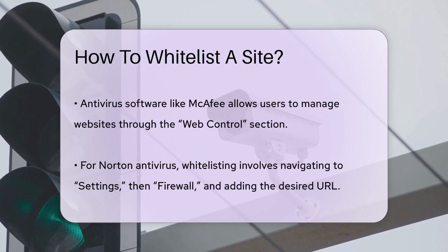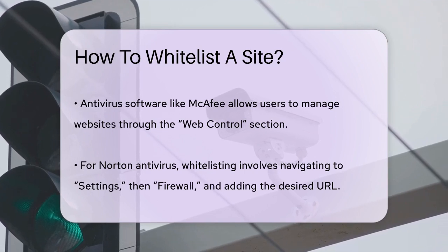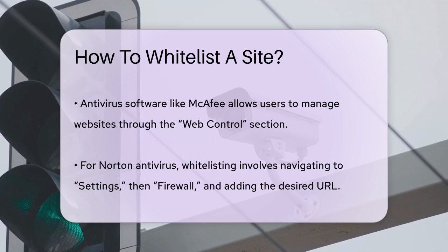For Norton, open the application, click on Settings, select Firewall, then Program Rules, and add the URL of the site you want to whitelist.